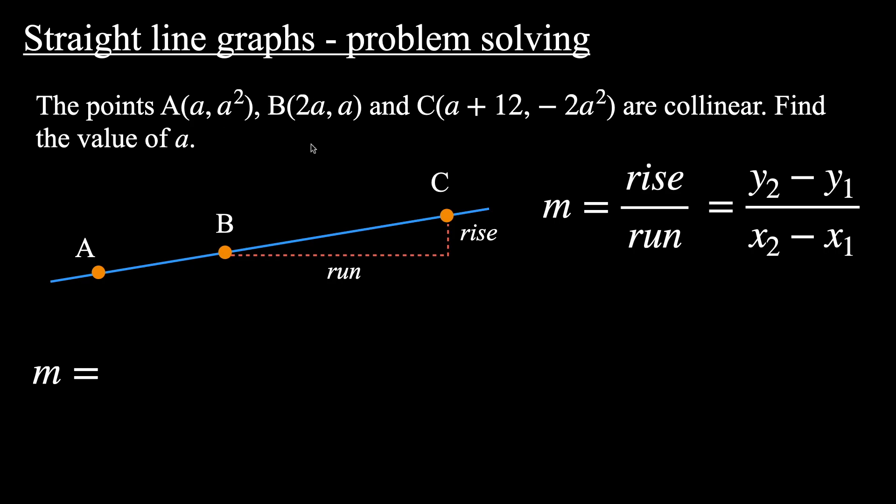So let's find that gradient then using these points. We're going to end up with some algebraic fractions. The first gradient between A and B, using these points we can do y₂ - y₁, so y₂ is a, y₁ is a². So the numerator here is a - a². The denominator is x₂, 2a, take x₁, a. So that's the gradient between A and B, and this will be equal to the gradient between B and C. So let's calculate that now. You can do it either way. You can do y₁ - y₂ or y₂ - y₁, and you will still get the same answer.